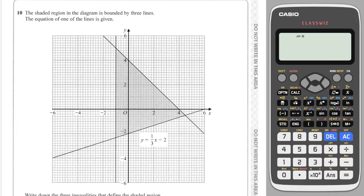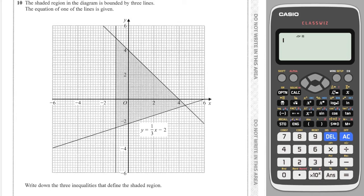Next question asks us to write down the three inequalities that define the shaded region. I need to work out these lines first. This vertical line goes through minus one — all vertical lines are X equals — so this is X equals minus one. Then we have this line coming down here, which has an intercept of plus four and a gradient of minus one, because for every one you go along you go down one. So it has a minus one gradient. That is our equation.